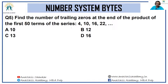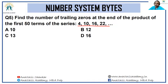Next: find the number of trailing zeros at the end of the product of the first 50 terms of the series 4, 10, 16, 22... Brains biased by algebra will see this as an AP; thinking in number system terms, this is a table of 6 starting at 4. The table of 6 normally starts at 6 (6, 12, 18...) but here each subsequent term comes after a gap of 6, starting at 4.